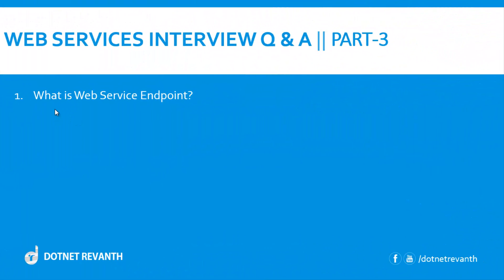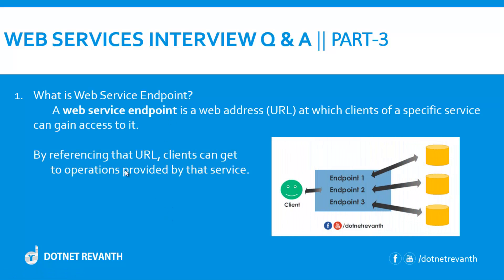First question: what is a web service endpoint? A web service endpoint is a web address, generally termed as a URL — uniform resource locator — at which clients of a specific service can gain access to it. By referencing that URL, clients can get to operations provided by that service. When we look at this picture, a client can communicate with the web service through this endpoint.